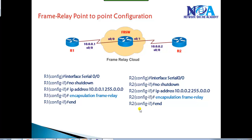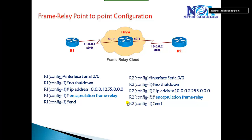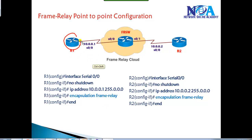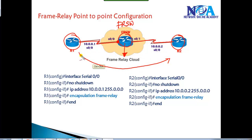In this video we'll continue with frame relay, discussing how to implement basic frame relay point-to-point configurations. For implementing and verifying this, I'm going to take some routers: Router 1 acting as Site 1, Router 2 acting as Site 2, and one more normal router with two interfaces acting as my frame relay switch. I'll show you some basic implementations like what configurations a service provider would do for communication between two different sites.